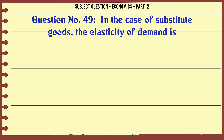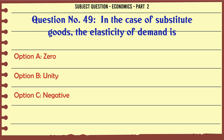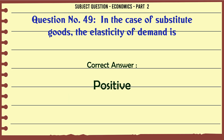In the case of substitute goods, the cross elasticity of demand is: A. Zero. B. Unity. C. Negative. D. Positive. The correct answer is: Positive.